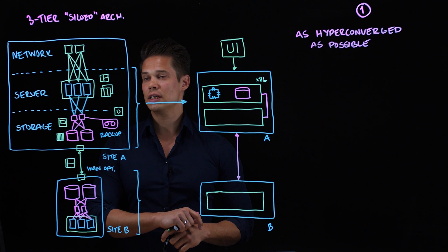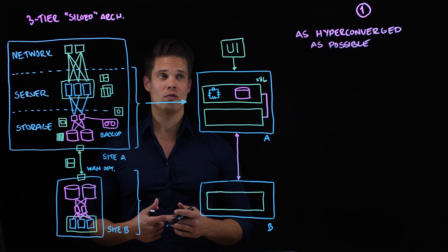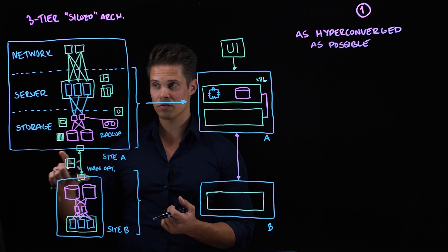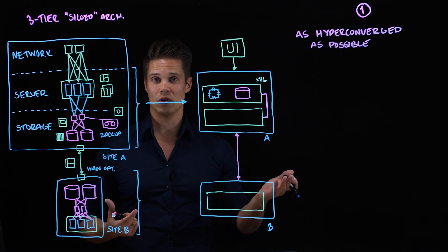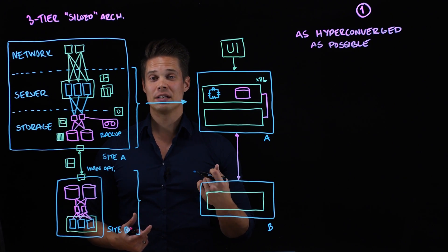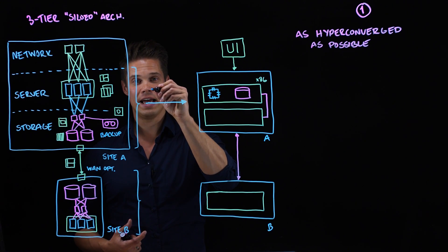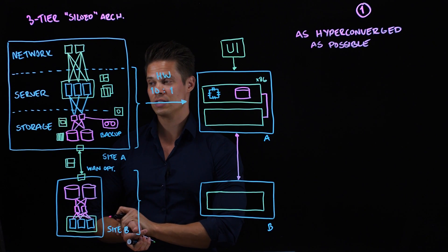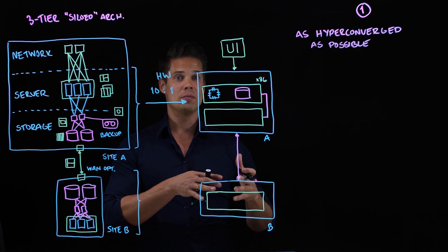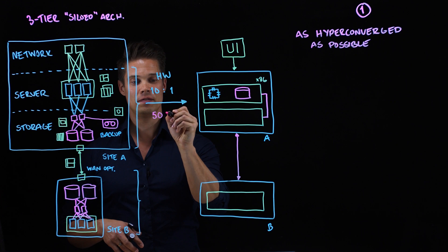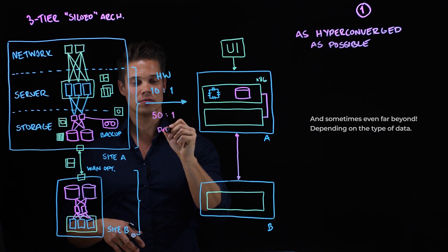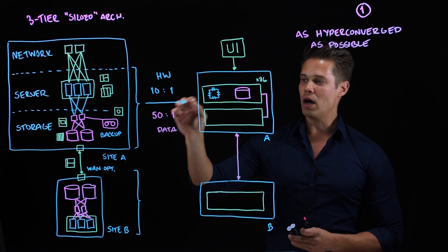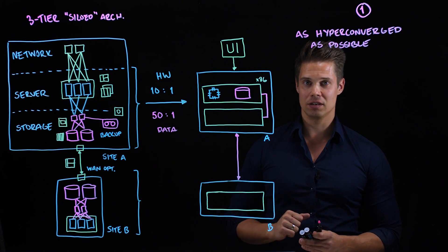Most typically, hyperconverged solutions can consolidate the infrastructure with a ratio of, let's say, four or five to one. So, let's say you had five racks of traditional infrastructure before and when you move to hyperconvergence, you manage only with one rack. That's pretty cool. But some of the best solutions can reach as high as 10 to 1 hardware consolidation ratios. The other aspect of this is the data reduction. The most sophisticated hyperconverged solutions out there, they can reach up to 50 to 1 data reduction. What this means is that if you have 50 terabytes of data, only one terabyte is actually written on the disks.